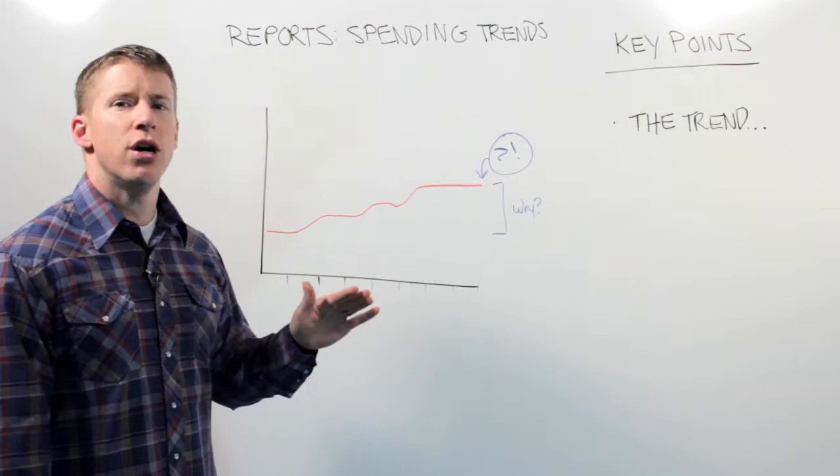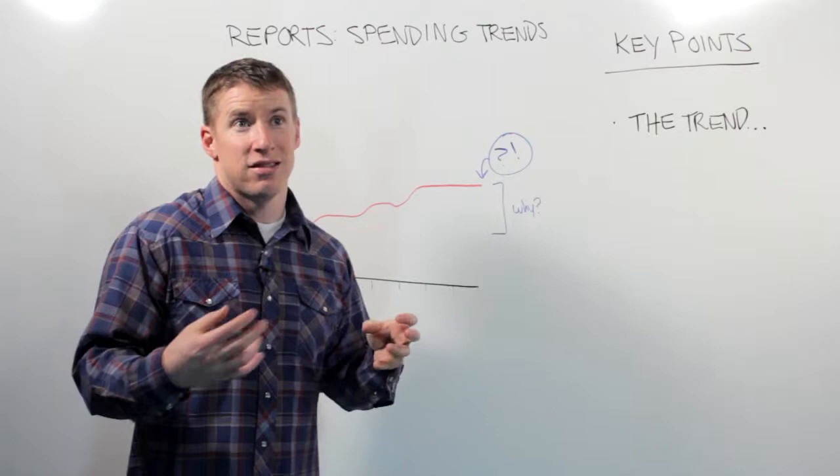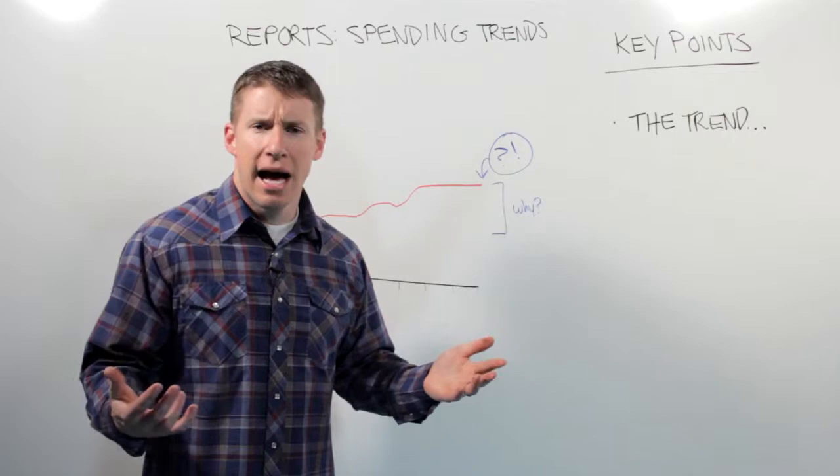But every once in a while, you'll pull up a report like this, and you'll see, unbeknownst to you and your monthly budget meeting and your frequent whipping out of the phone behavior, unbeknownst to you, you've had some spending creep. Spending creep means it snuck up on you without you really even noticing it.